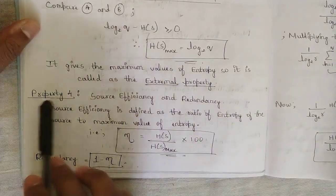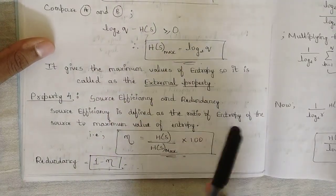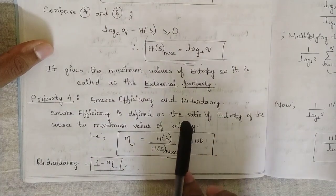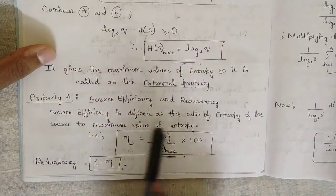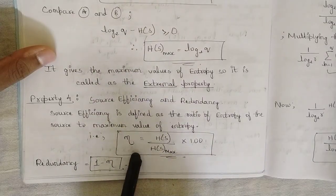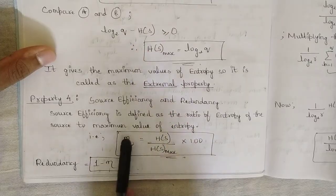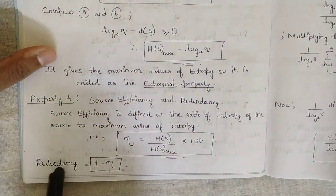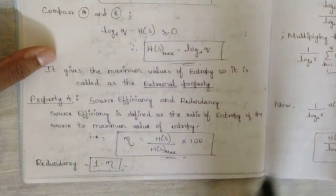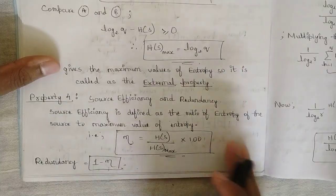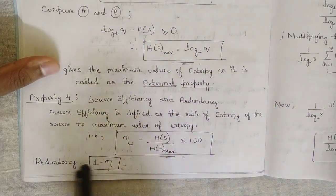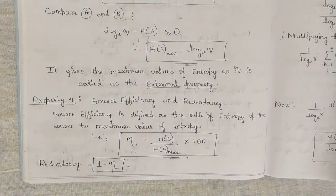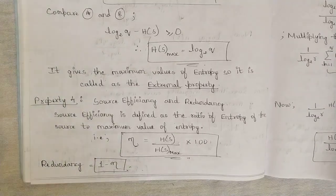The last and final property is property four, based on source efficiency and redundancy. Source efficiency is defined as the ratio of entropy of the source to the maximum value of entropy, denoted by eta (η): η = H(S) / H_max(S) × 100. Redundancy is the inverse of source efficiency — for example, if source efficiency is 75%, redundancy is 25%, i.e., 1 minus the source efficiency percentage. All four properties of entropy have now been discussed.